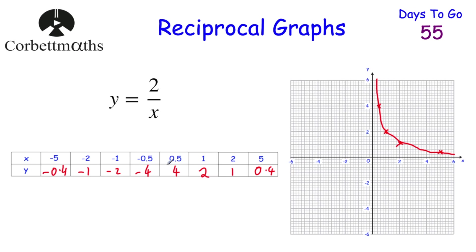Now let's have a look at the points where the x-values are negative. So (negative 0.5, negative 4) would be here; (negative 1, negative 2) would be there; (negative 2, negative 1) would be there; and (negative 5, negative 0.4) would be here. Now let's draw our curve — there we go. As you can see, it looks similar to the curve in the other quadrant, but because we're dividing 2 by negative values we're getting negative answers, so it's down here. And that's what our reciprocal graph looks like.